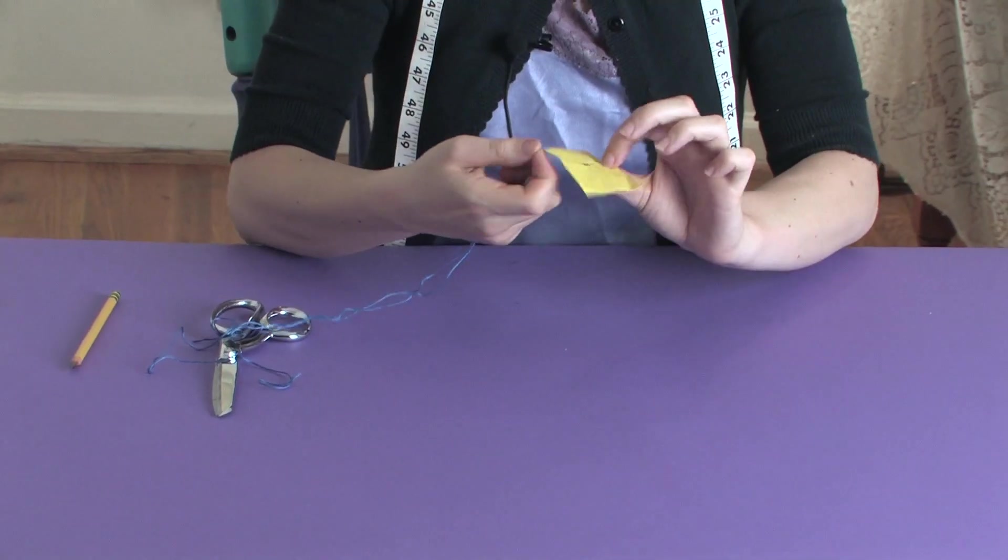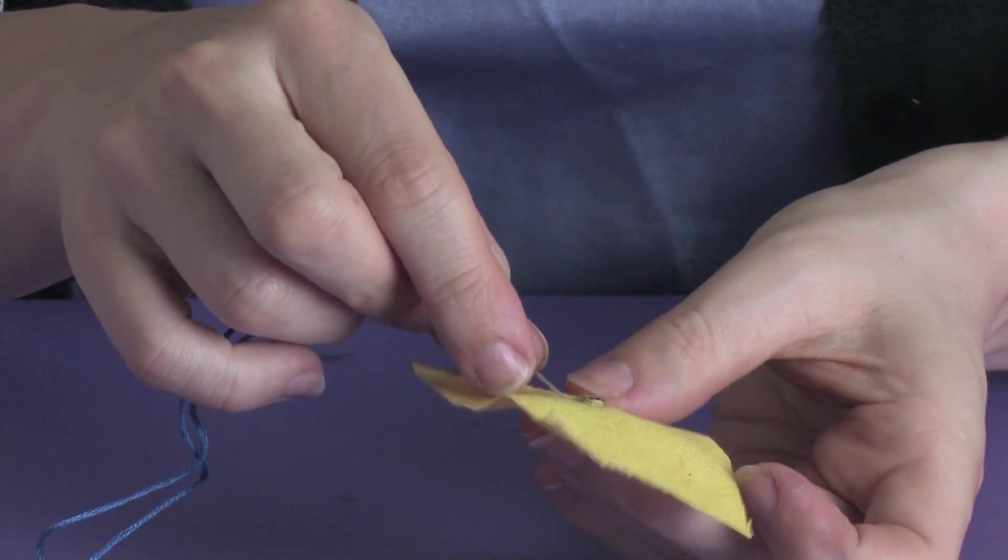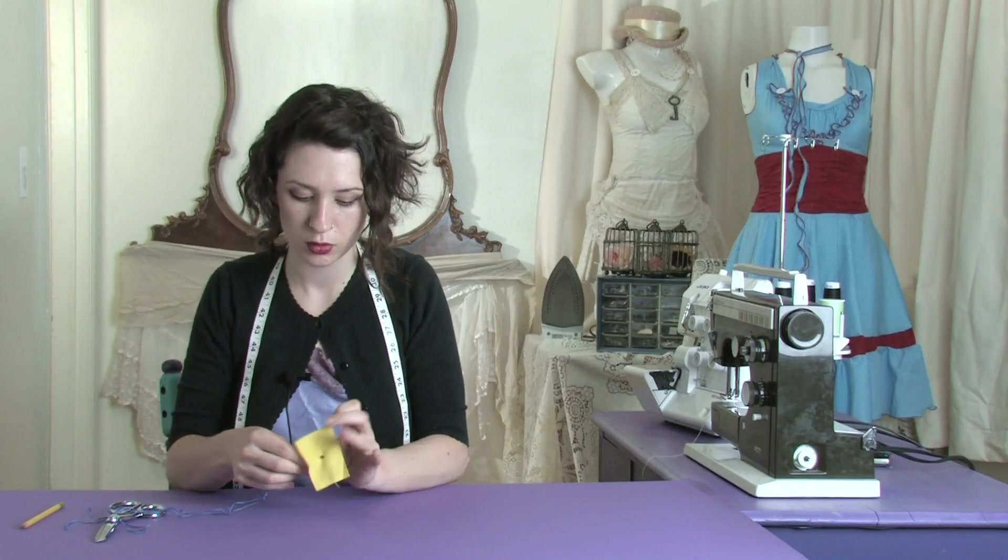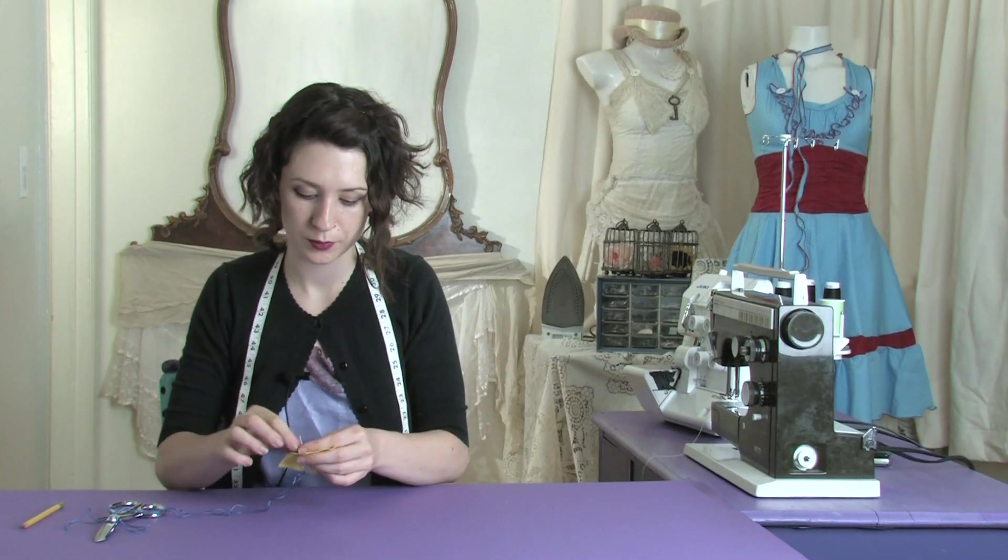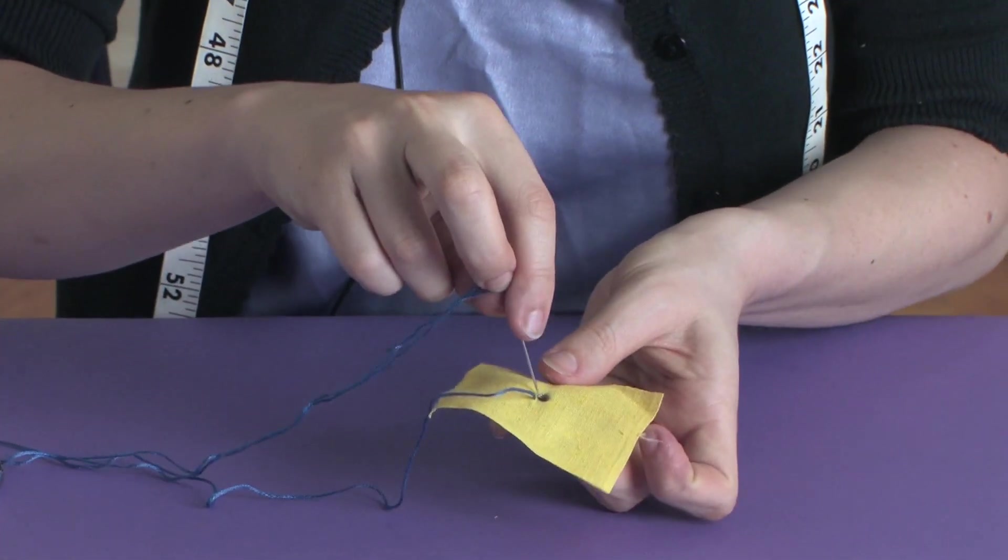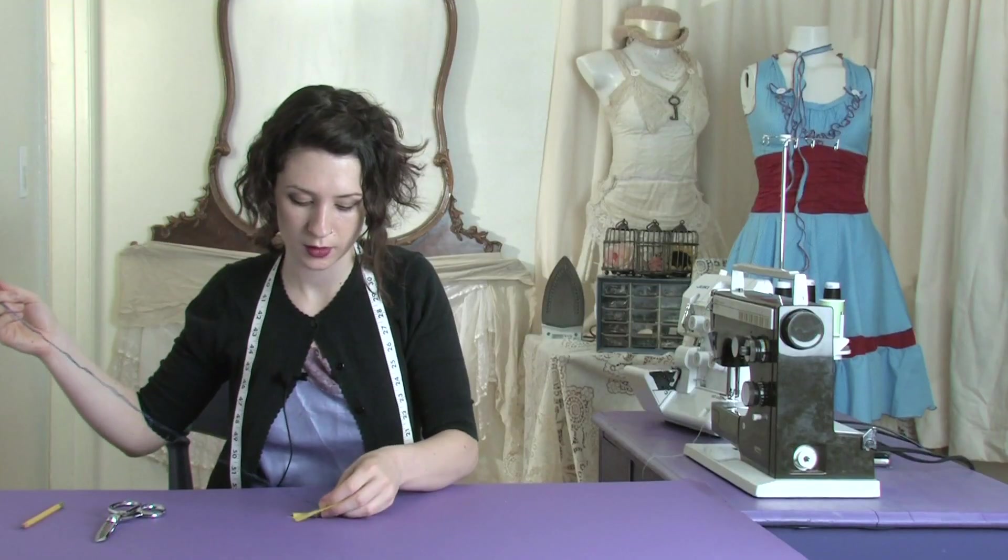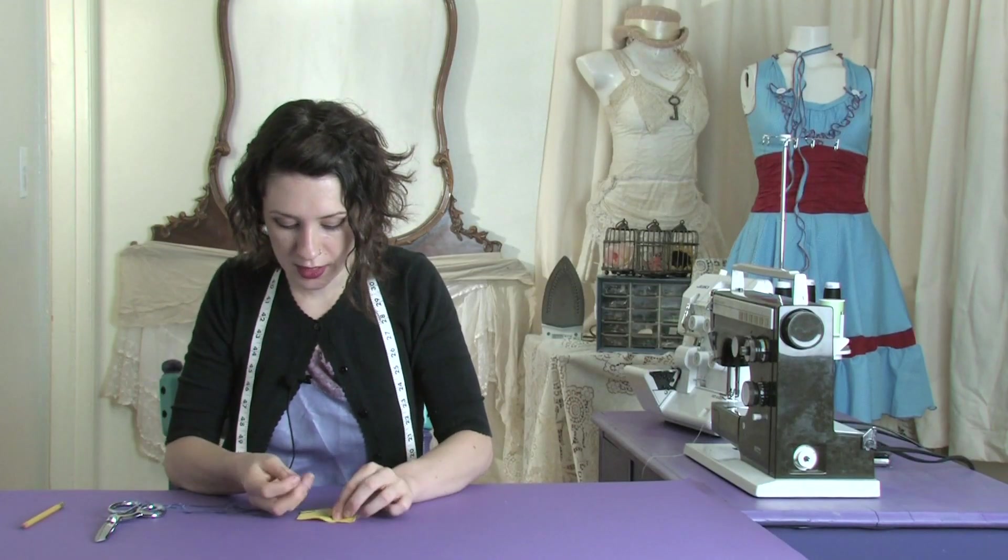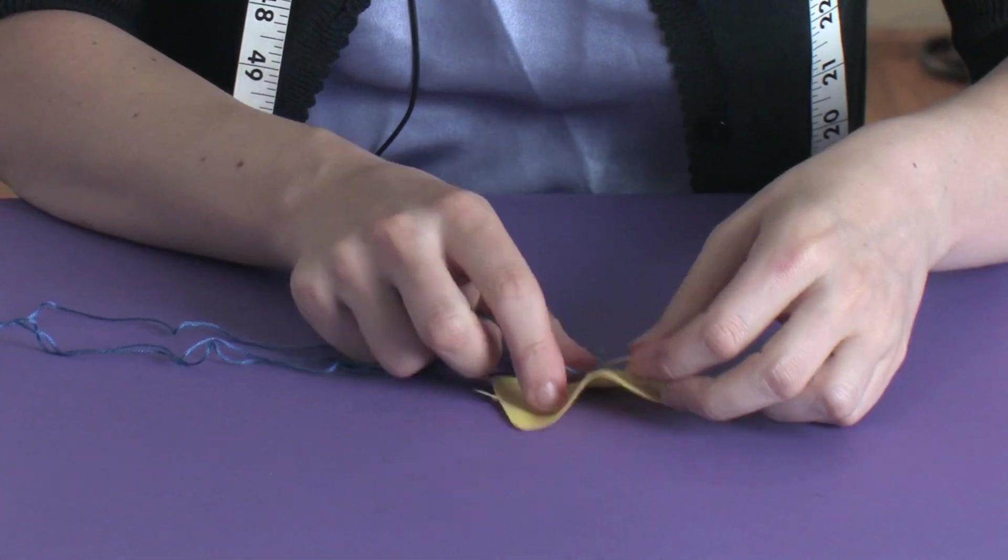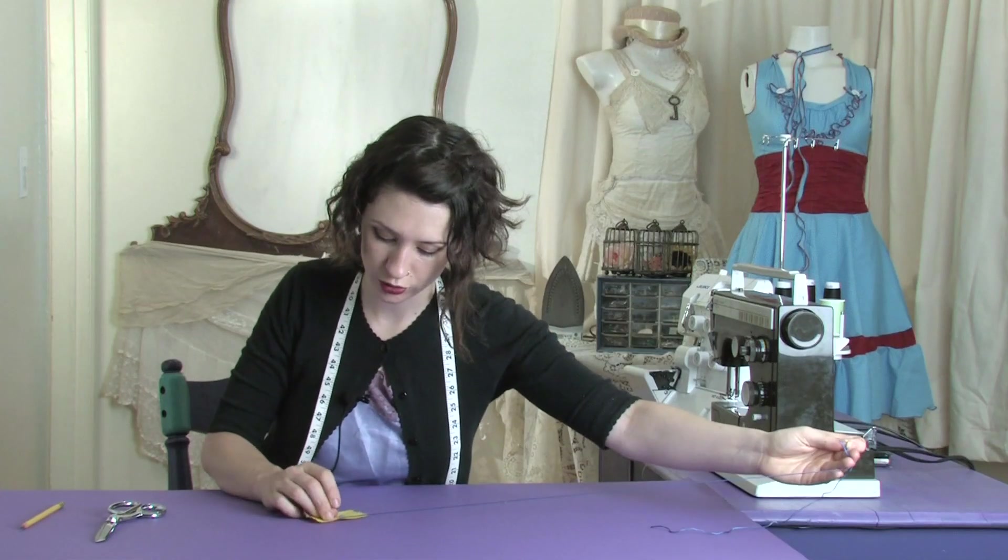So the first thing you do is come up from the back of your eyelet fairly close to the hole. Pull it all the way through and then go back down through the hole. Then you're going to take your needle and push it back through the threads right under your knot. This is going to secure your thread in place.